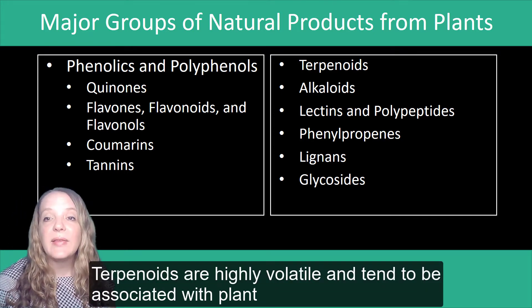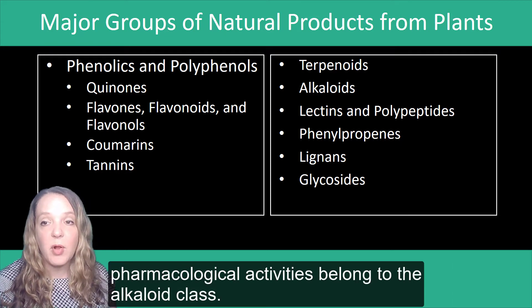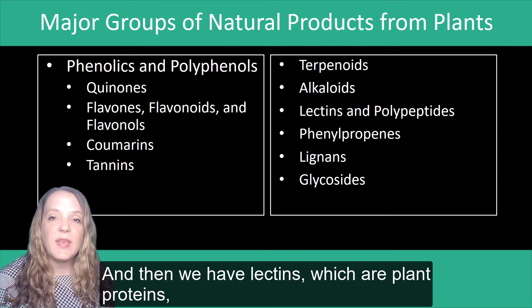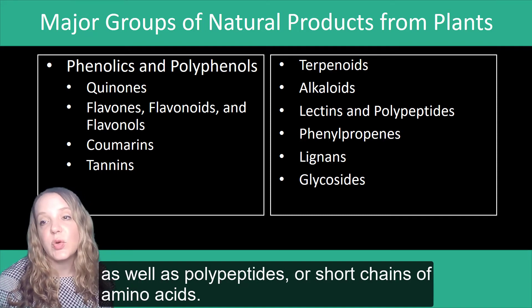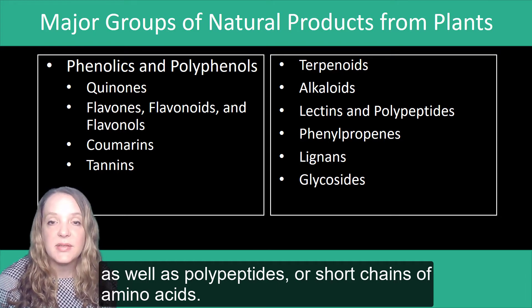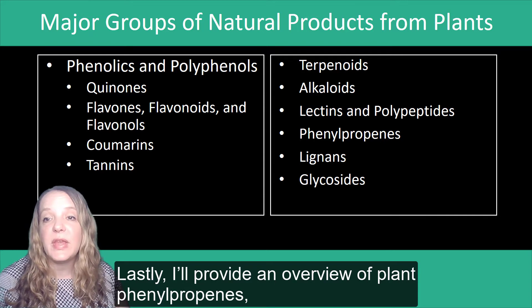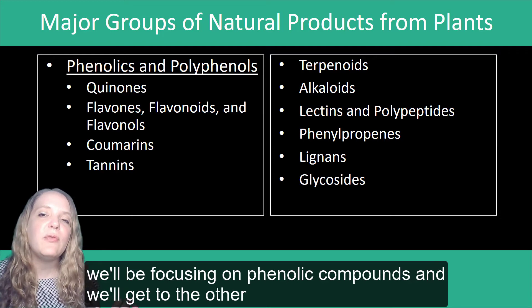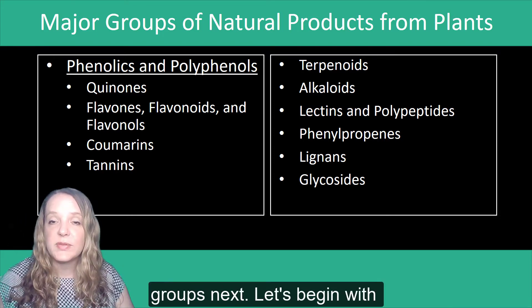Terpenoids are highly volatile and tend to be associated with plant fragrances. Many of the plant compounds with psychoactive pharmacological activities belong to the alkaloid class. And then we have lectins, which are plant proteins, as well as polypeptides or short chains of amino acids. Lastly, I'll provide an overview of plant phenylpropenes, lignans, and glycosides. For this lesson though, we'll be focusing on phenolic compounds and we'll get to the other groups next.